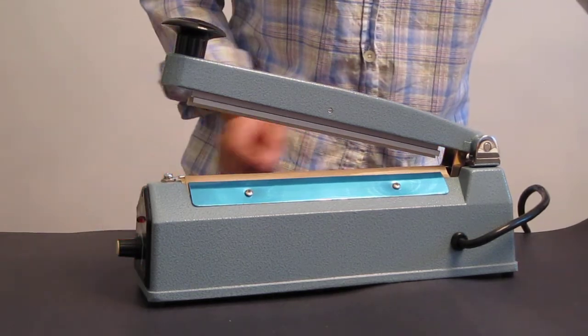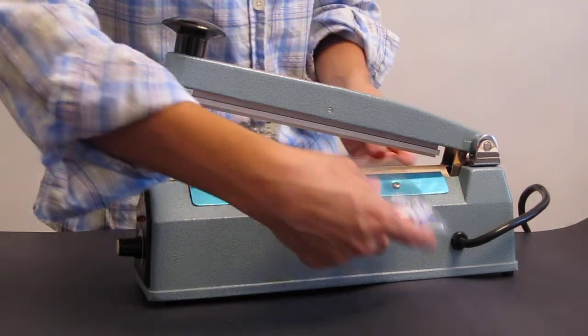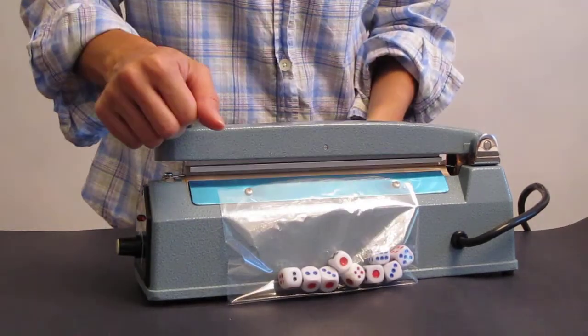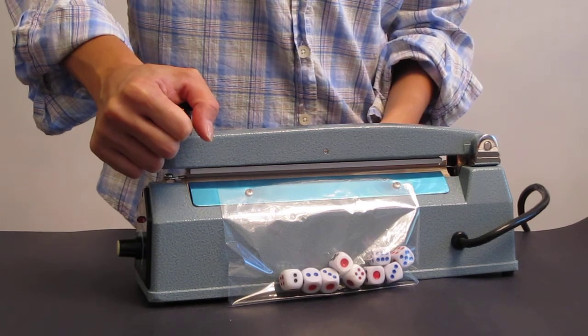Next, place your bag on the sealing pad and bring the sealing arm down until the red light turns off, plus an additional two to four seconds to set the seal.